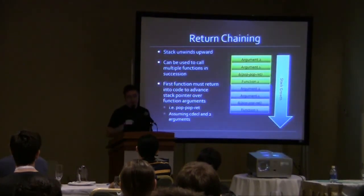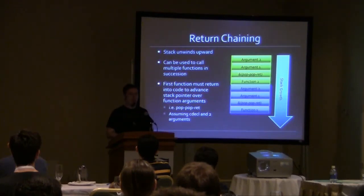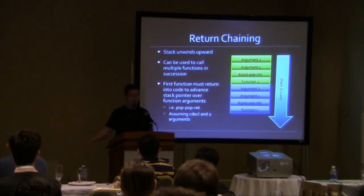If that's not enough to achieve your goals, you can do return chaining. This exploits the fact that on x86, your return address and your arguments all come from the same stack. So if you've obliterated the stack and control the whole thing, you control not just the return address but the arguments as well.